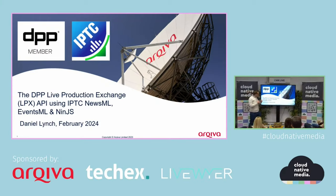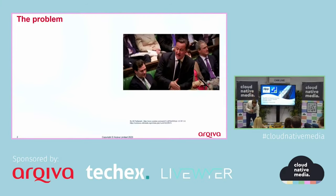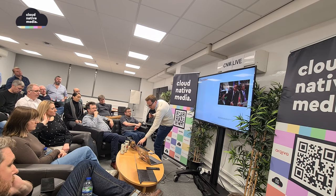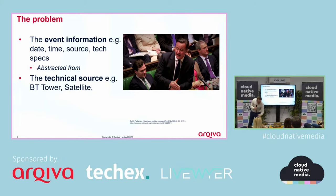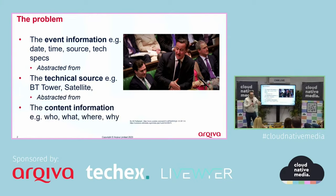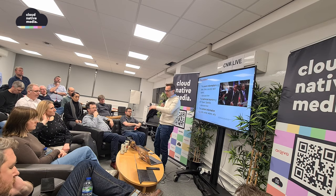We've been working on the problem of how to do live production exchange. Take Prime Minister's Question Time as an example — it has event information: date, time, source, and tech specs, but that's abstracted from the technical information about where the source is coming from, whether it's on a satellite. That's further abstracted from the content information — what Question Time is likely to be about — and then the transcript of what happened afterwards.